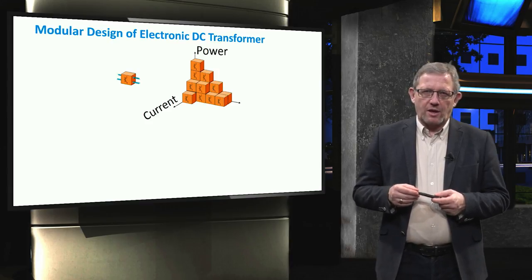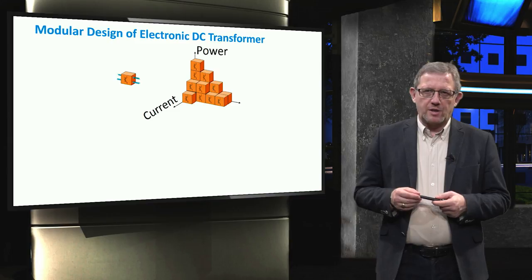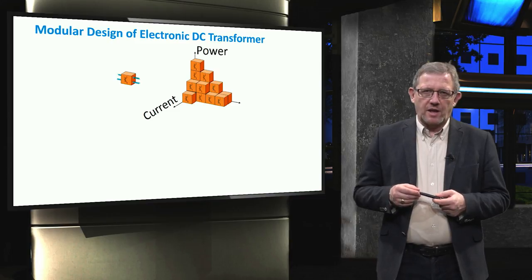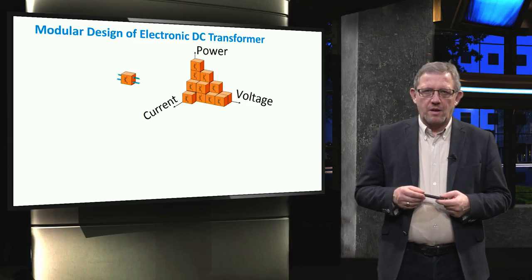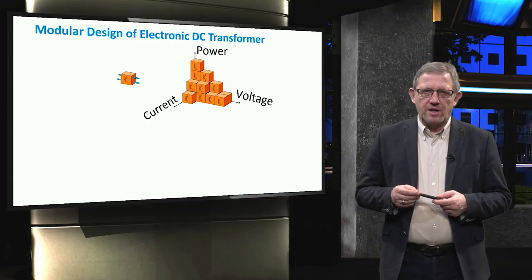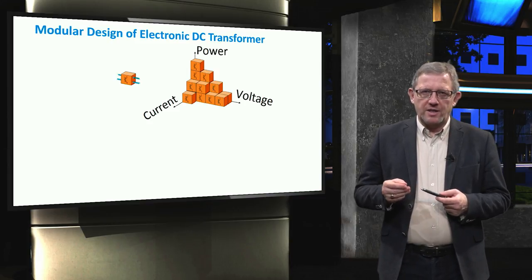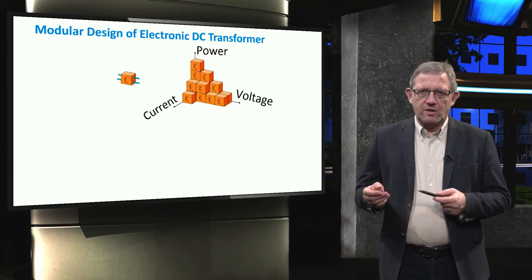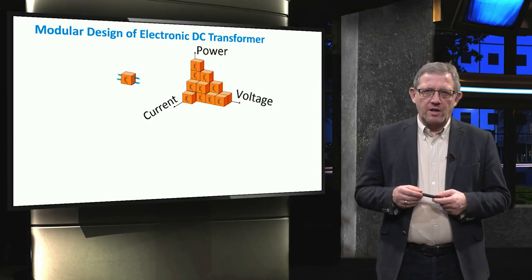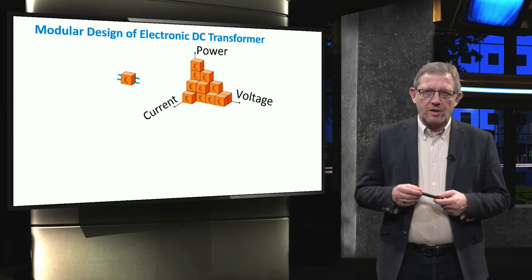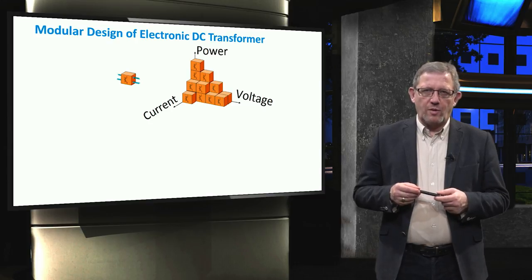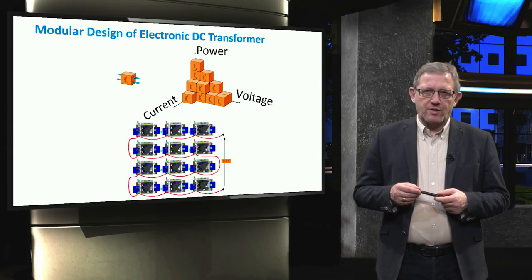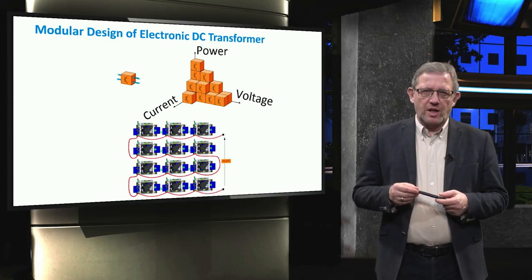If the modules are connected in parallel, then it is possible to increase the current capacity. If the modules are connected in series, then the overall voltage rating will be increased. Using parallel and series connections, it is possible to build up high power electronic transformers in a modular way, where an example of 16 modules in series to reach 10 kV is shown.